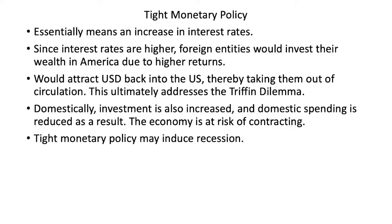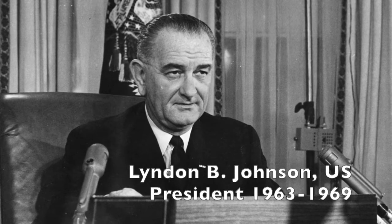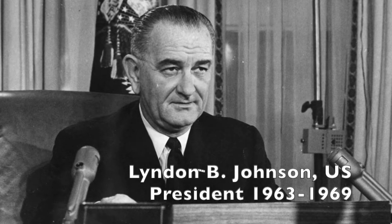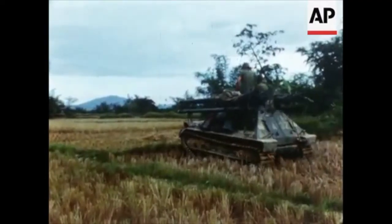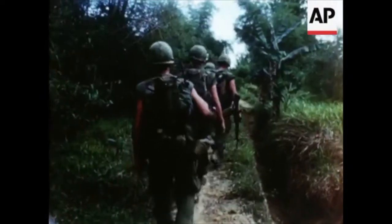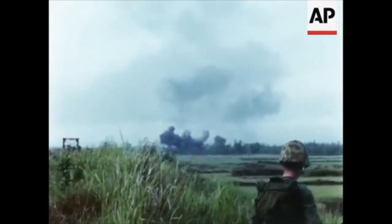However, this policy would also reduce domestic spending, as individuals and businesses would also prefer to invest their money. Consequently, the economy would shrink, and a recession occurred when this monetary policy was implemented in 1957 and again in 1961. Other measures included manipulating government bond yields, imposing taxes whenever US dollars left the United States, and threatening to pull out military support for West Germany. These measures were considered short-term successes at the time, but by the mid-60s, the Federal Reserve accelerated the printing of US dollars to fund the escalating war in Vietnam along with the expensive social programs introduced by President Lyndon B. Johnson.